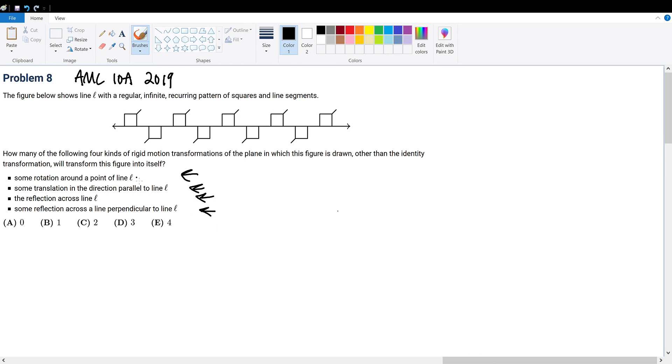Let's consider the first one: some rotation about a point on line L. Since this sequence is infinite, and we know that as long as we do not change orientation we're fine, we can obviously see here that we can rotate this thing 180 degrees. And why can we rotate 180 degrees and not any other degree?